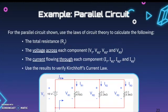Let's complete an example using a parallel circuit. For the parallel circuit shown, use the laws of circuit theory to calculate the following: the total resistance; the voltage across each component — Vt, VR1, VR2, and VR3; the current flowing through each component — IT, IR1, IR2, and IR3. Then use these results to verify Kirchhoff's current law. This is going to take a few moments, so pause the video now.